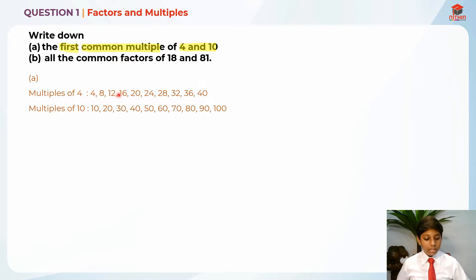Wait. So we can see this, right? Between these two, there's two 20s. So actually 20 is the first common multiple.